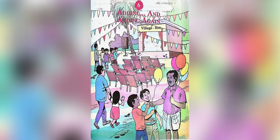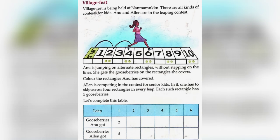Lesson 6: Adding and Adding Again. Village Fest is being held at Nanmamukku. There are all kinds of contests for kids. Anu and Ellen are in the leaping contest. Anu is jumping on alternate rectangles without stepping on the lines.